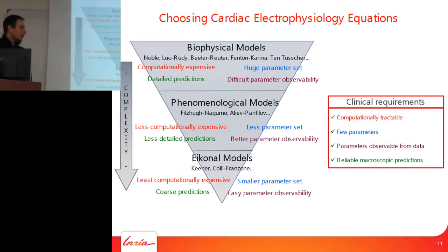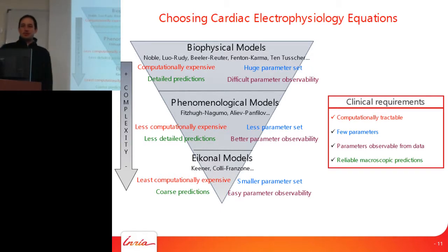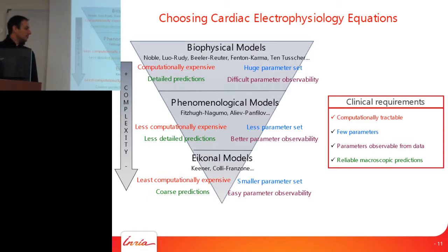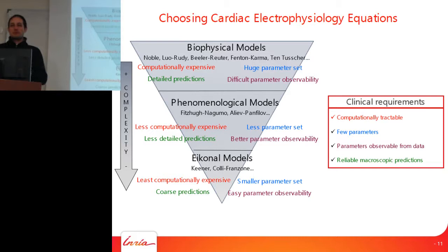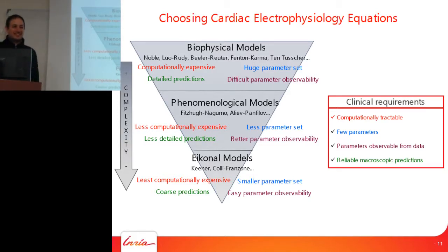Clinical requirements are: first, it should be computationally tractable — you need to give an answer in reasonable time before the patient's intervention is already done. You shouldn't have too many parameters, and they should be observable from the data. But still, the prediction must be realistic. As Einstein said, the model should be as simple as possible, but not simpler — you must find the right level of simplification.